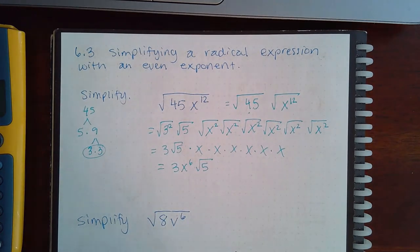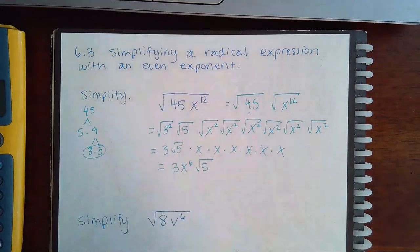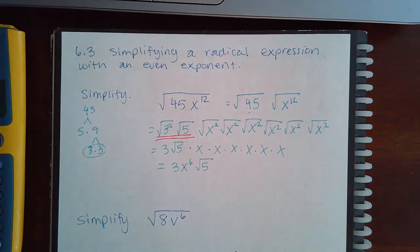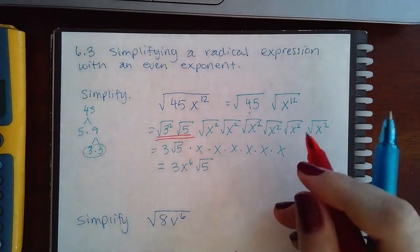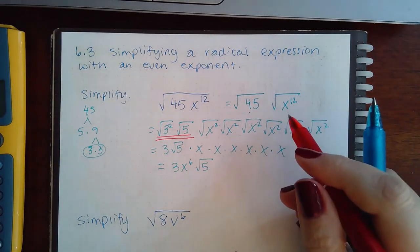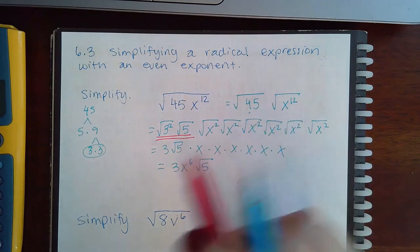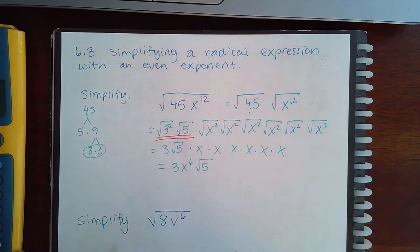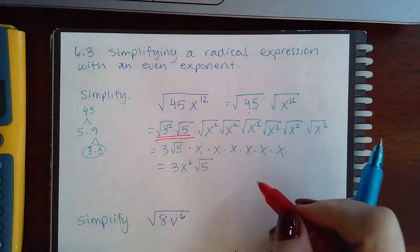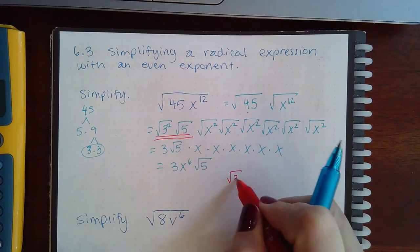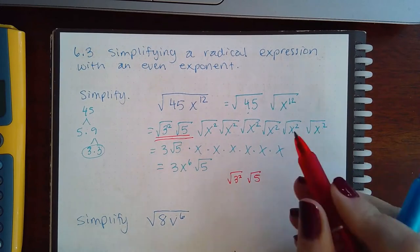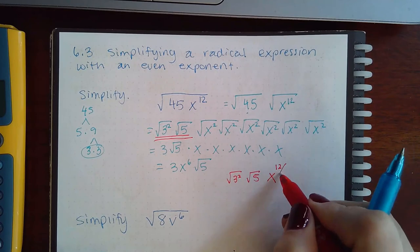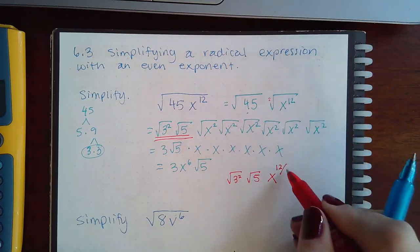Now the number portion of this problem really is the best way to do that. There's really no other better way to do that part, the number part. However, for the variable part, I would not use this technique for the variables. For the variables, what I would do instead is I would keep the square root of 3 squared times 5, and for the variables I would actually rewrite that as x to the 12 over this index, which is a 2.